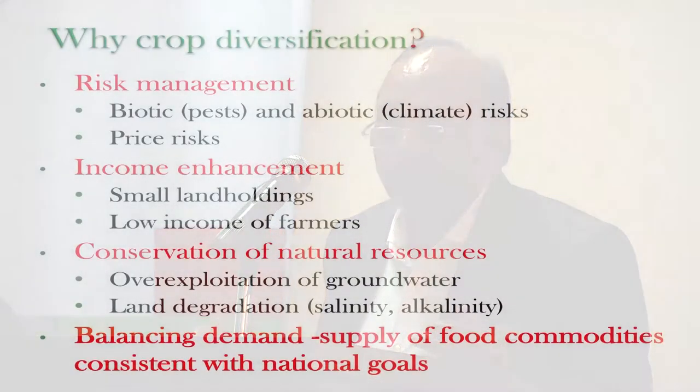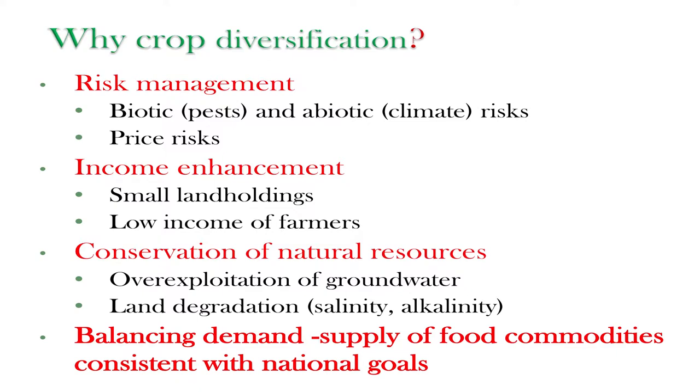The question arises: can farmers operating such tiny holdings have a sustainable livelihood in agriculture, or should they diversify towards crops that generate higher returns to land, labour, or capital? Natural resources like land and water are under stress—70% of groundwater blocks in the country are in the dark zone—particularly in the Indo-Gangetic plains where rice and wheat, the water-guzzling crops, dominate. What are the possibilities of shifting the cropping pattern to water-efficient crops?